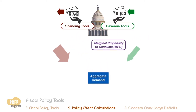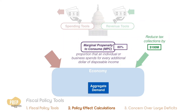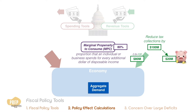The MPC is the proportion that an individual or business spends for every additional dollar of disposable income. For example, if the government reduces tax collections by $100 million and the MPC is 80%, the increase of consumption in the economy goes up by $80 million. The remaining $20 million goes to savings.